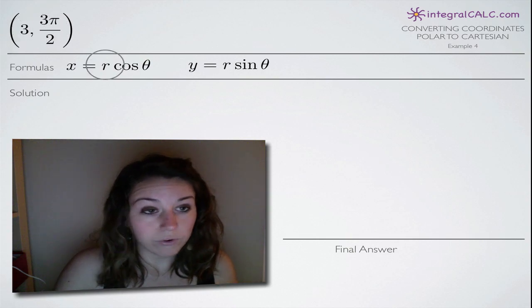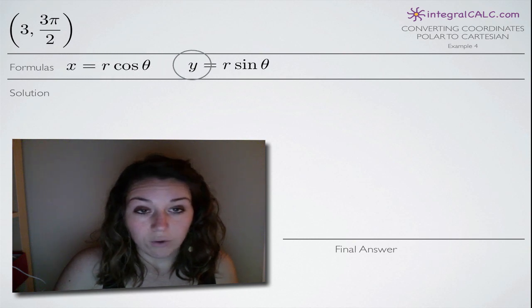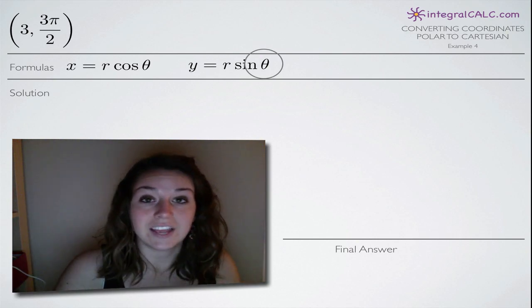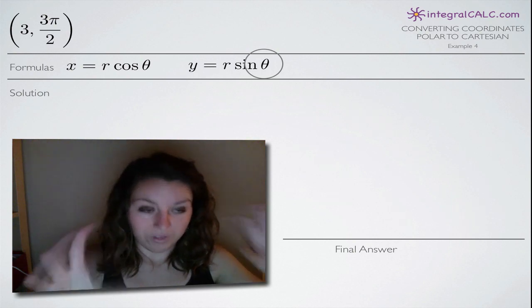So we're going to plug in 3 for r and 3π/2 for theta into both our x equation here and our y equation here. And when we simplify those, when we evaluate and simplify, that's going to give us our x, y coordinate when we started out with our r, theta coordinate.